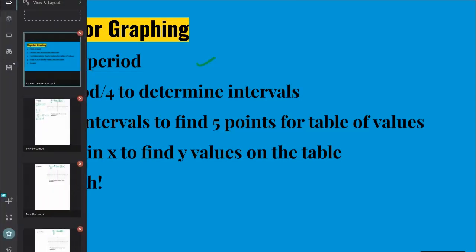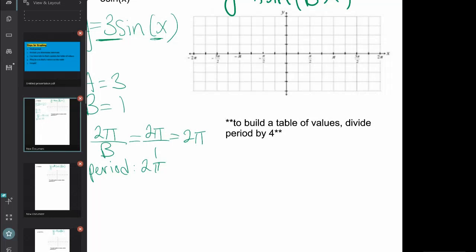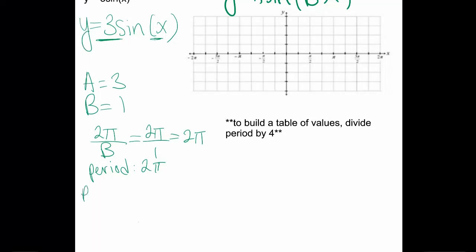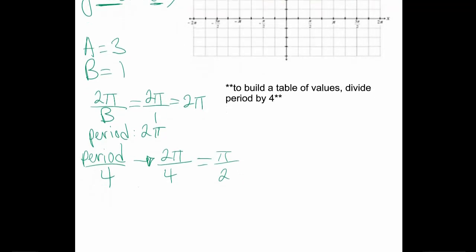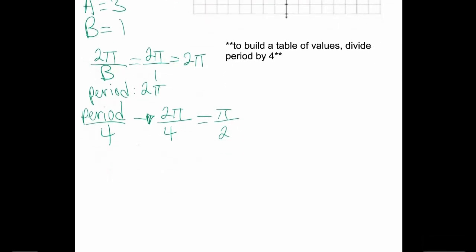Now we have to figure out what our intervals will be. You have to divide period by 4 to figure out what your intervals will be. So your period is 2π. When you divide it by 4 and simplify the fraction that you have right in front of you, you should get π over 2. So π over 2 are your intervals, meaning when you build your table of values, you are going to increase your table of values by π over 2 every time.